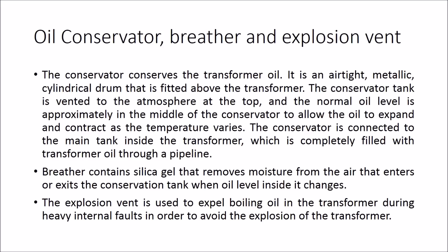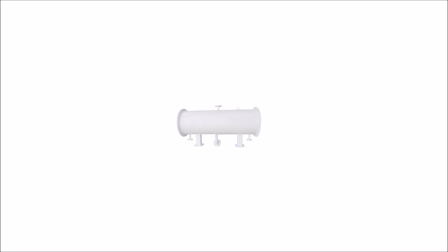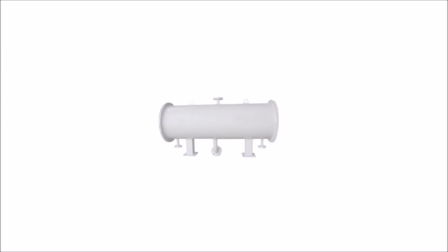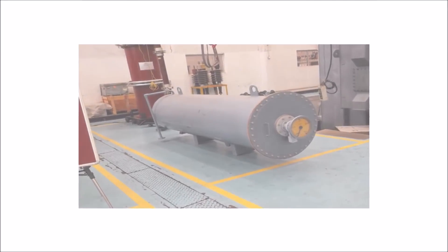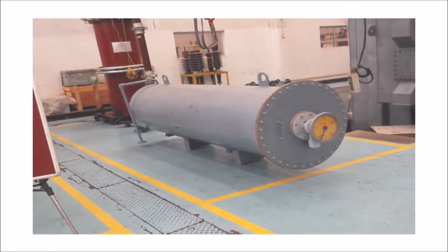The conservator conserves the transformer oil. It is an airtight metallic cylindrical drum fitted above the transformer. The conservator tank is vented to the atmosphere at the top, and the normal oil level is approximately in the middle of the conservator to allow the oil to expand and contract as temperature varies. The conservator is connected to the main tank inside the transformer, which is completely filled with transformer oil, through a pipeline.